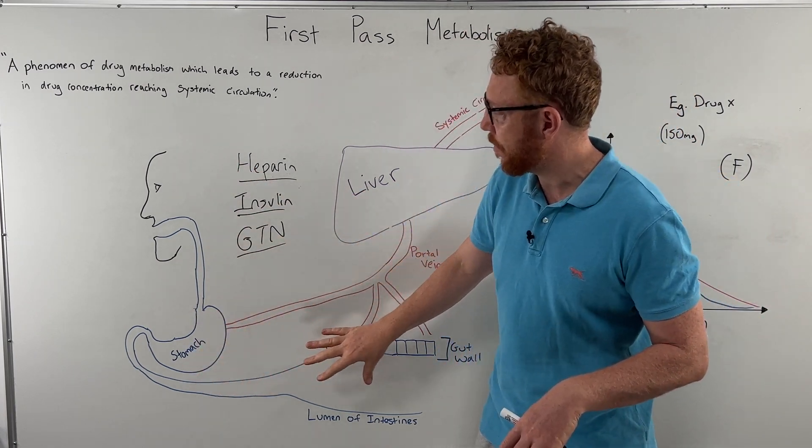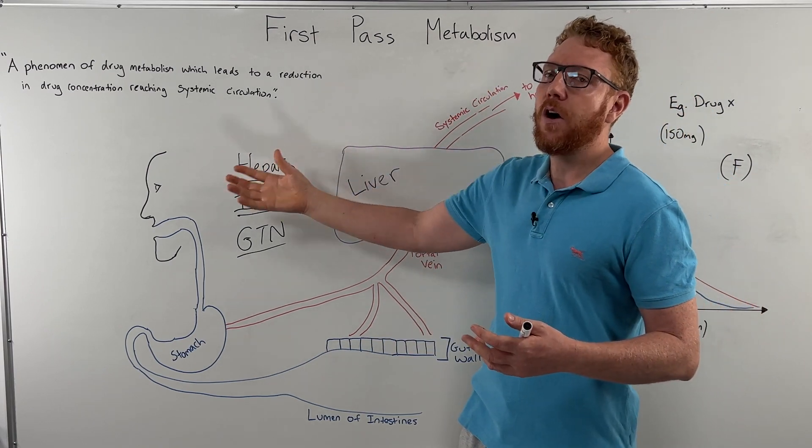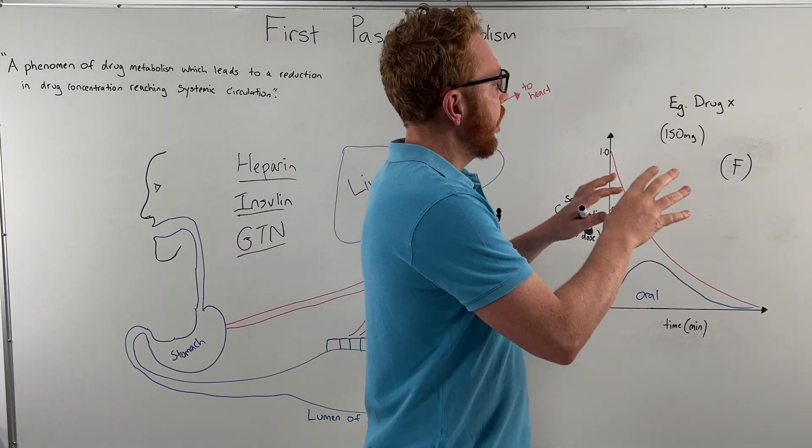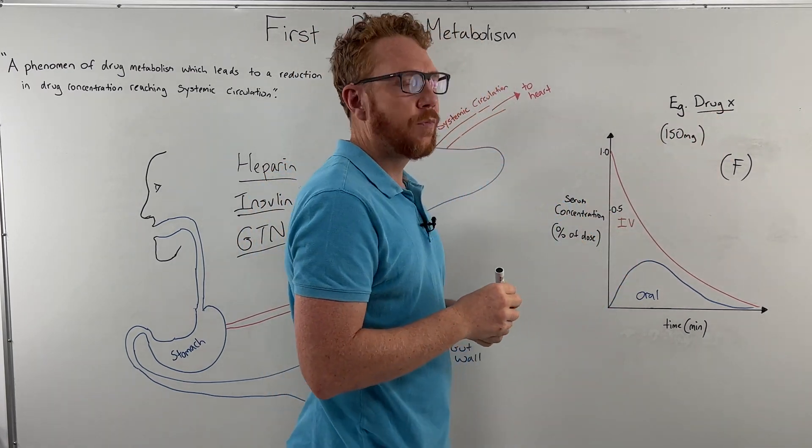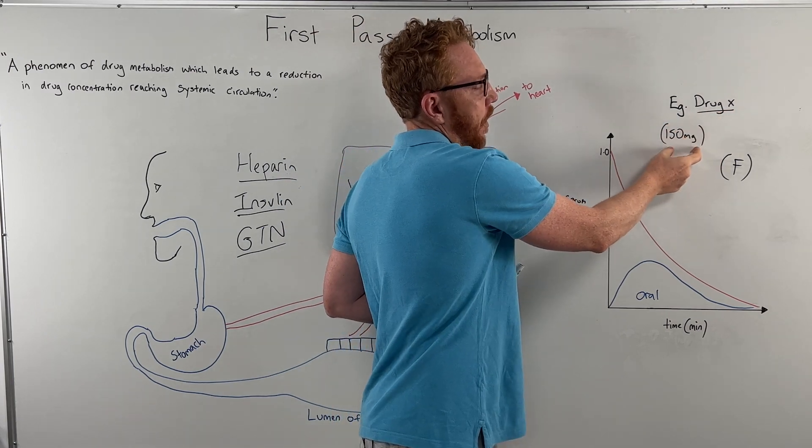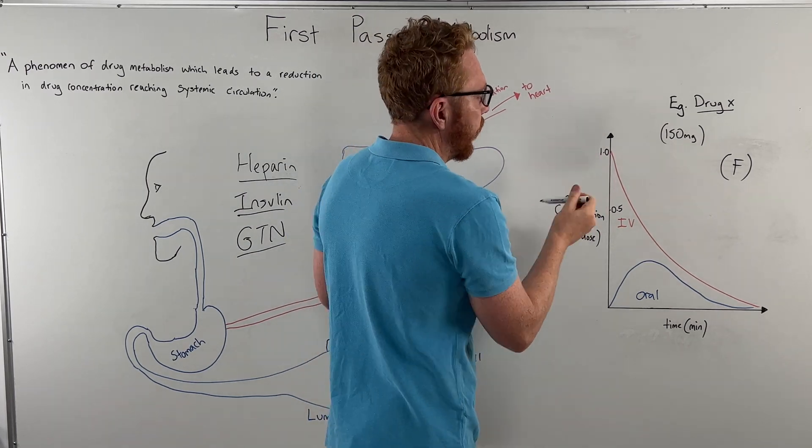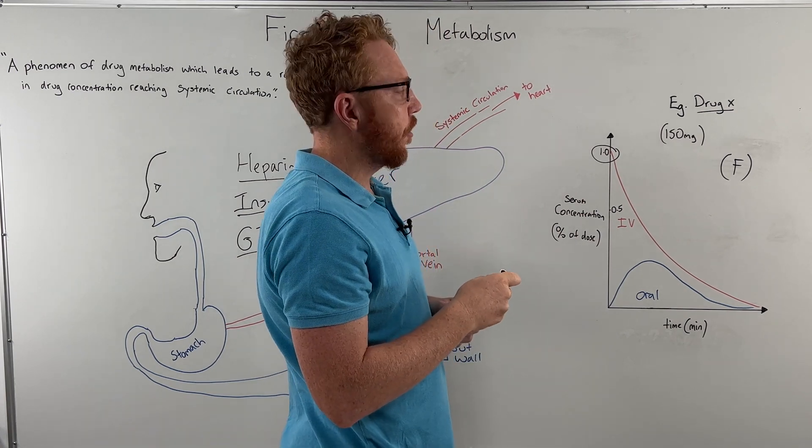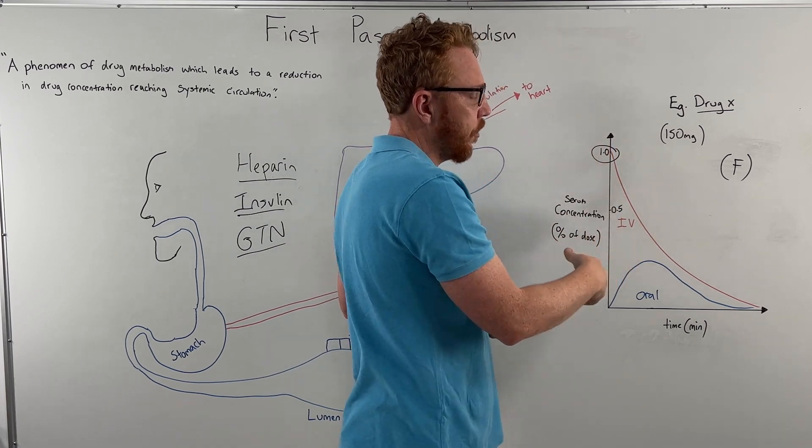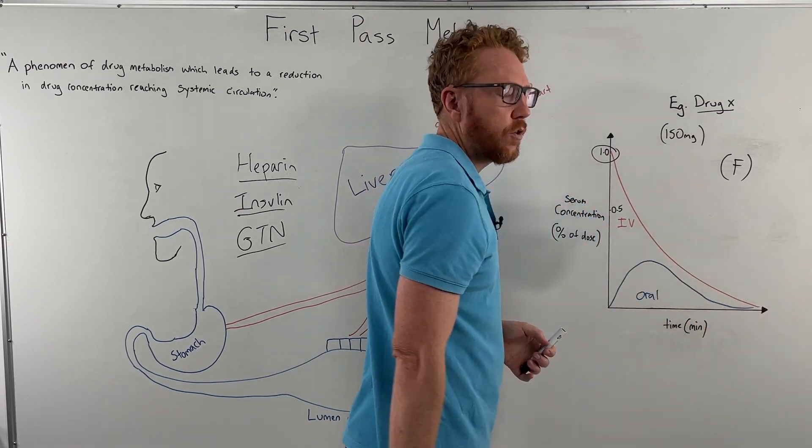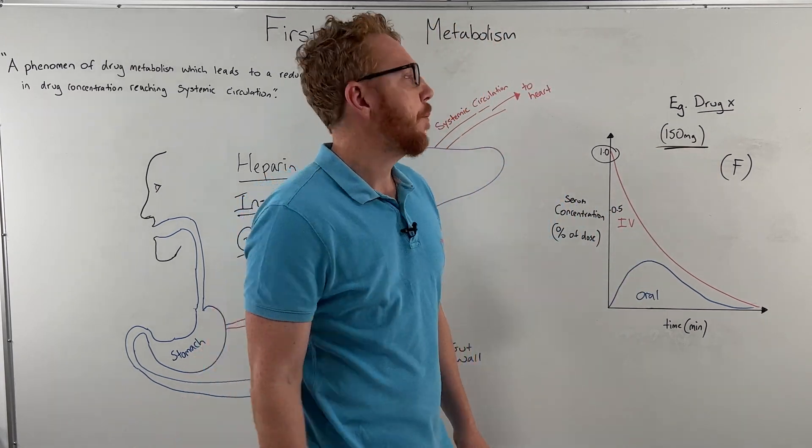All right. So hopefully that makes sense in terms of the different ways we can have an impact by the first pass metabolism, how much of the oral drug reaches the systemic circulation. Finally, I want to draw your attention to this particular figure, and we're going to give an example of a drug, drug X. As I said, let's give drug X 150 milligrams. And if we were to give it IV, 150 milligrams of it or 100% or 1 would reach the systemic circulation immediately. So it has a very good bioavailability. And then slowly over time, as the drug's being used in the body, being metabolized and excreted, the concentration will slowly drop off.